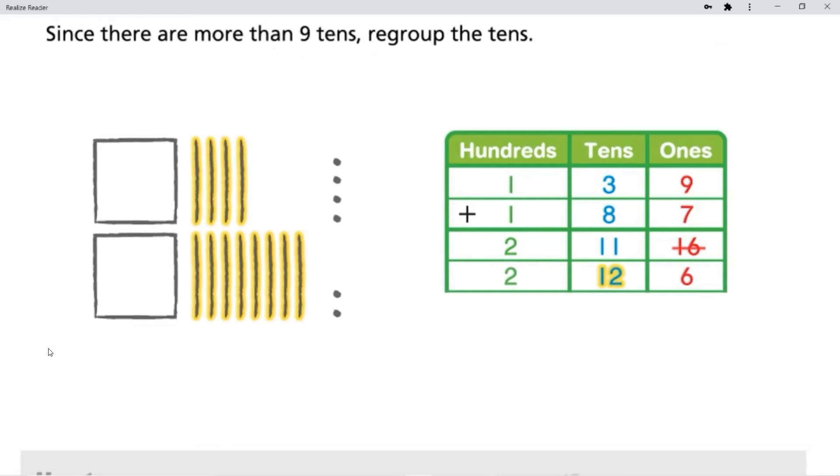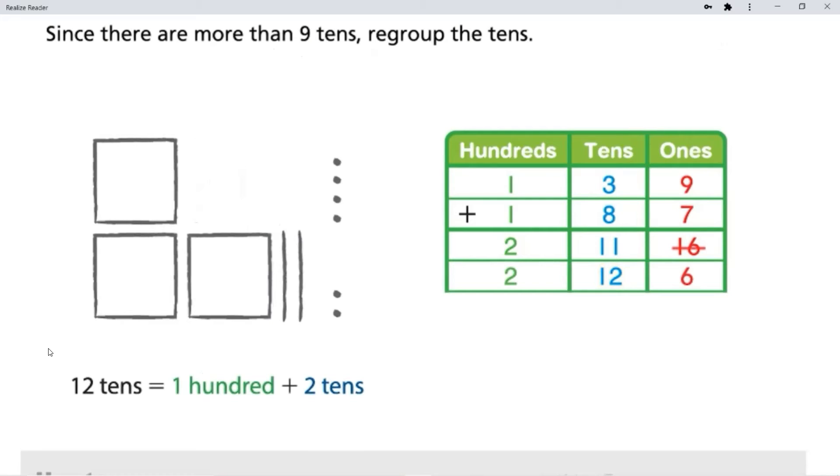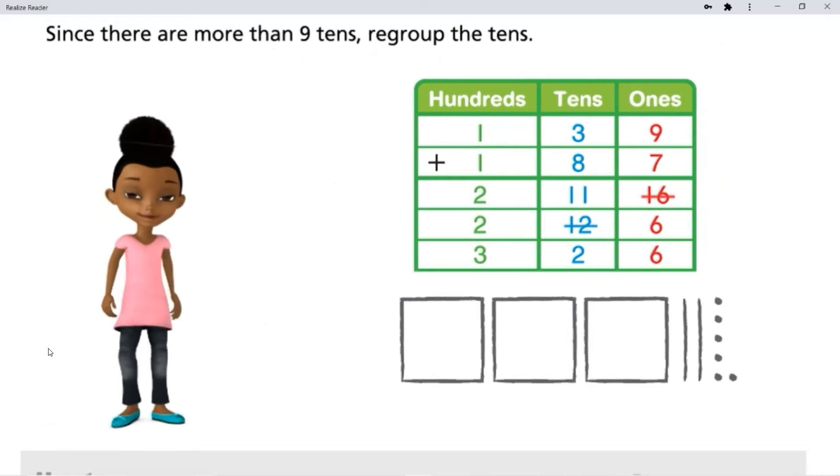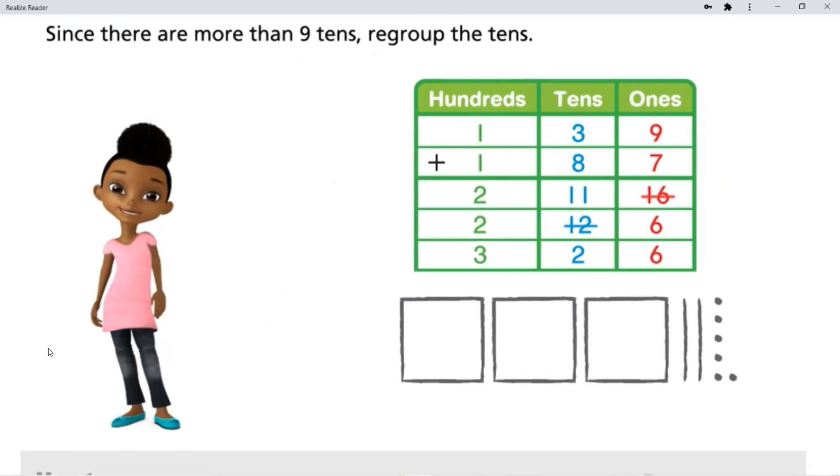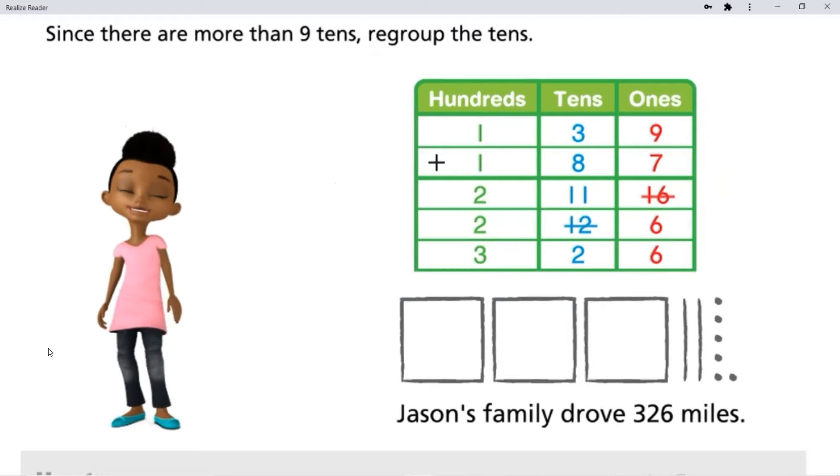12 tens. Since there are more than 9 tens, regroup the tens. 12 tens equals 100 plus 2 tens. 139 plus 187 equals 326. Jason's family drove 326 miles.